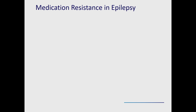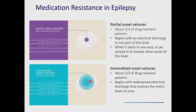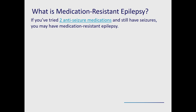Partial onset, also known as focal seizures, begin in one part of the brain and may spread to involve other areas. About two-thirds of patients with focal seizures may develop medication resistance. Generalized onset seizures begin with widespread electrical discharge involving the entire brain at once; about one-third of those patients may develop medication resistance. Medication resistance means that if you've tried two medications and still have seizures, you may have medication-resistant epilepsy.